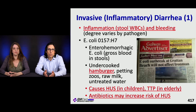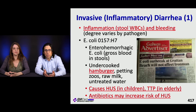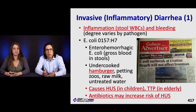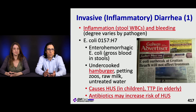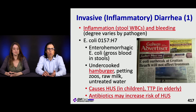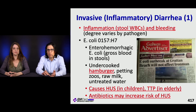One of the most famous is E. coli O157H7, which causes enterohemorrhagic E. coli, so there's gross blood in the stools. Famously, this is caused by undercooked hamburger at fast food restaurants. It can also be associated with petting zoos, raw milk, or untreated water. In kids, this can cause hemolytic uremic syndrome or TTP in the elderly, and antibiotics might actually increase the risk of HUS.